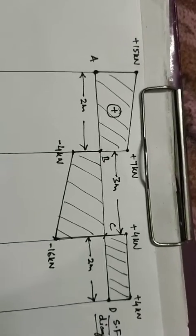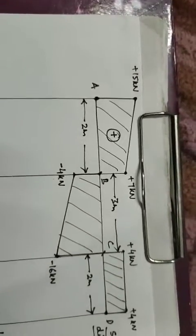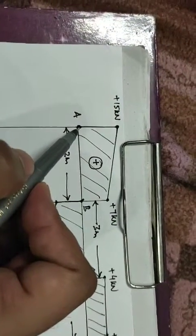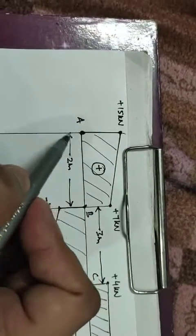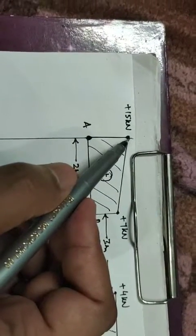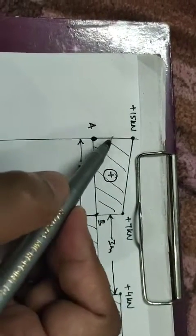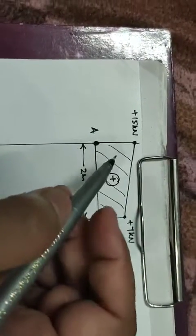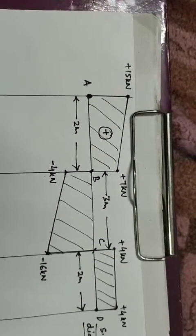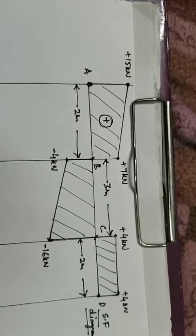The procedure is based on certain points. The first point is that load is generally calculated by finding the difference of shearing forces. If there is a negative force at any point, that is taken as the reaction; a positive force is taken as the load.